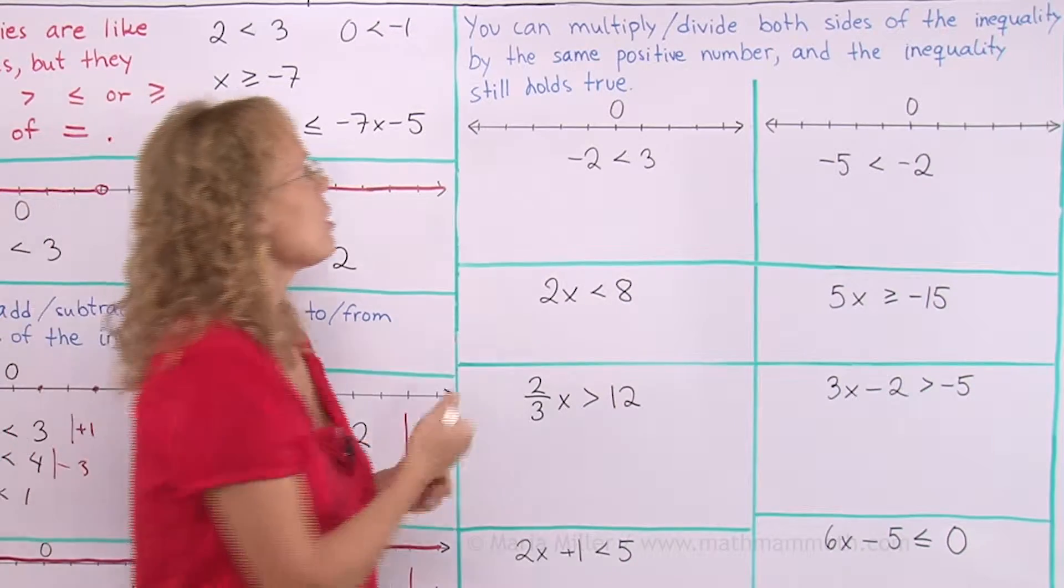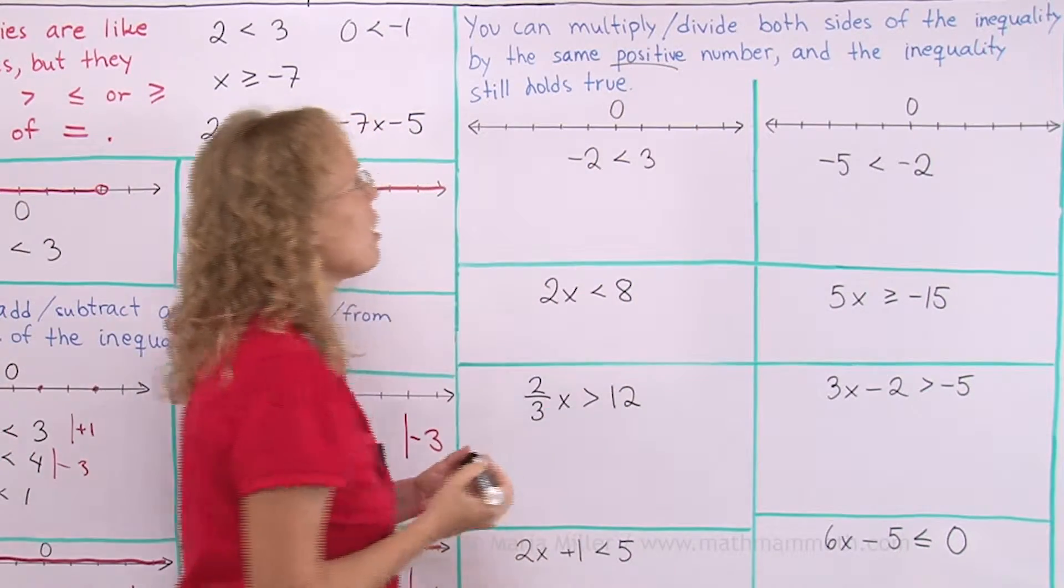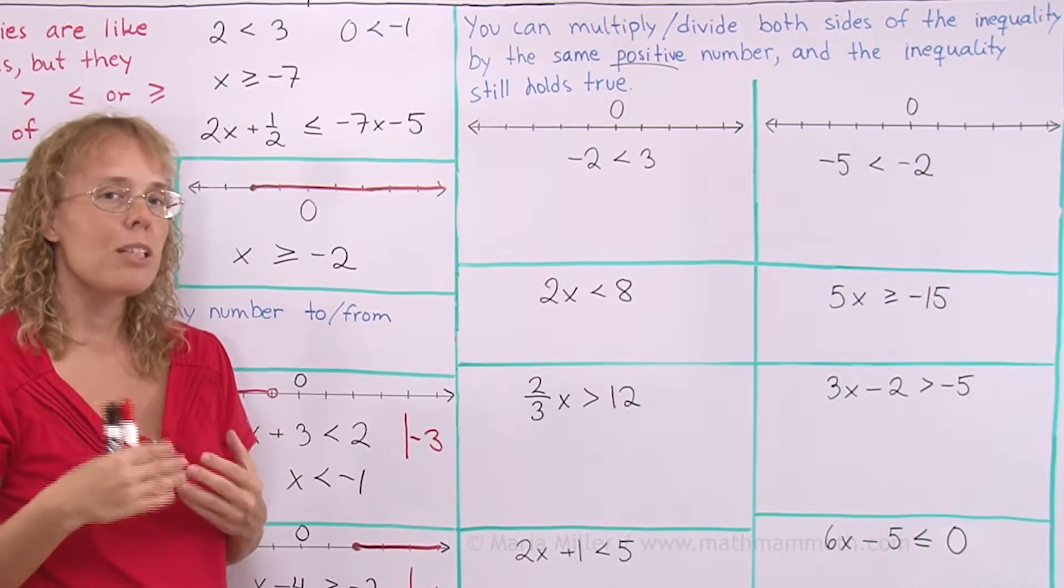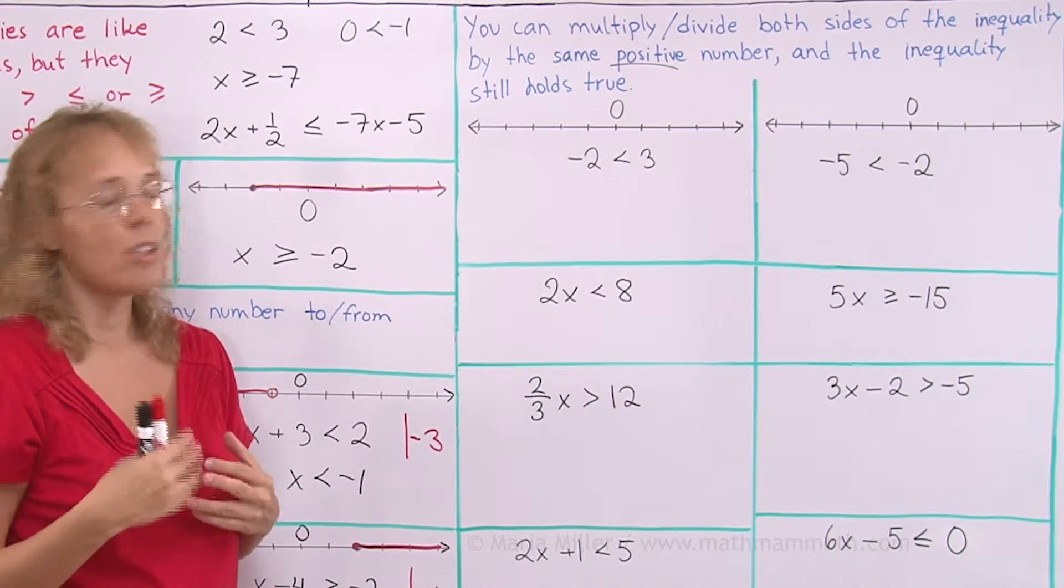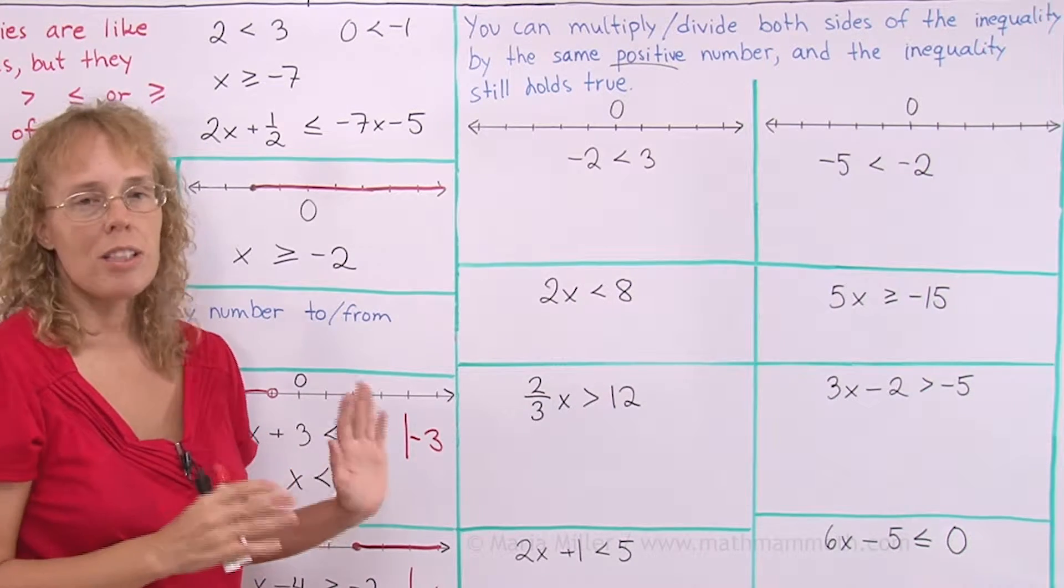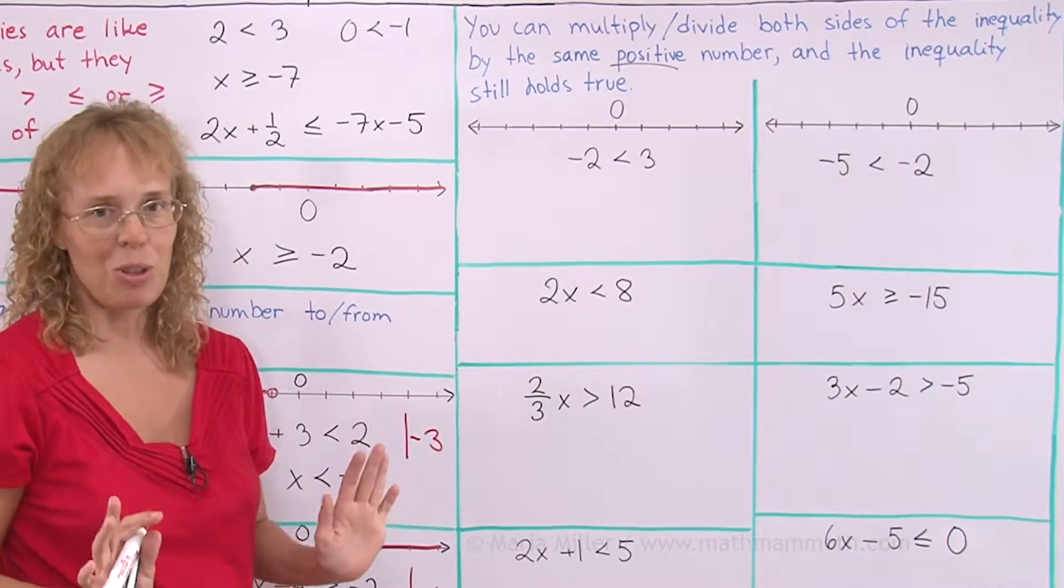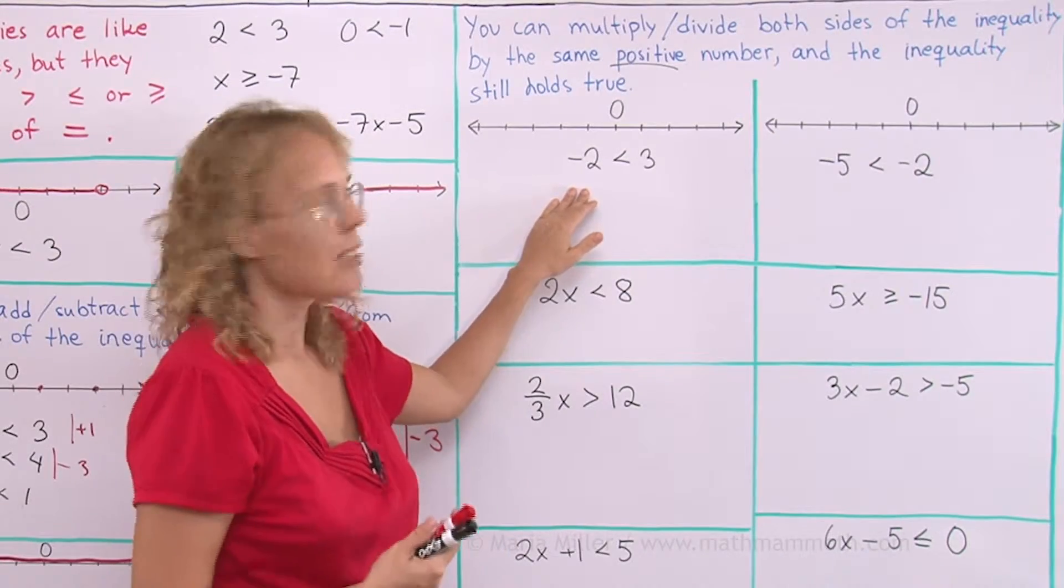Notice I had to put here positive number because something different happens if you were to multiply it by a negative number, or divide by a negative number, but we're not going to deal with that case in this lesson. Let me try to now justify this rule.